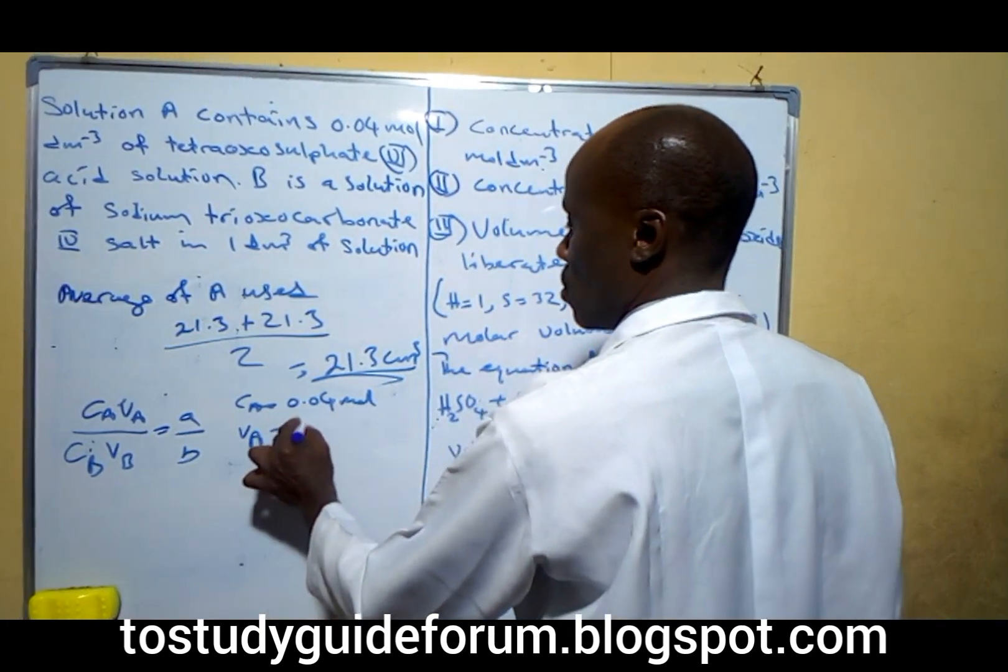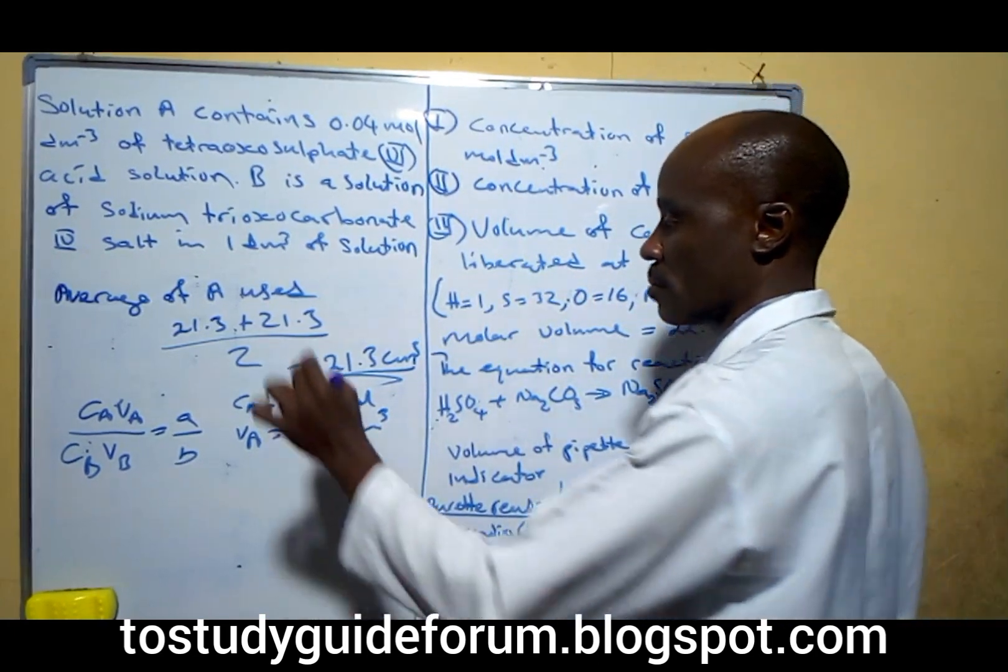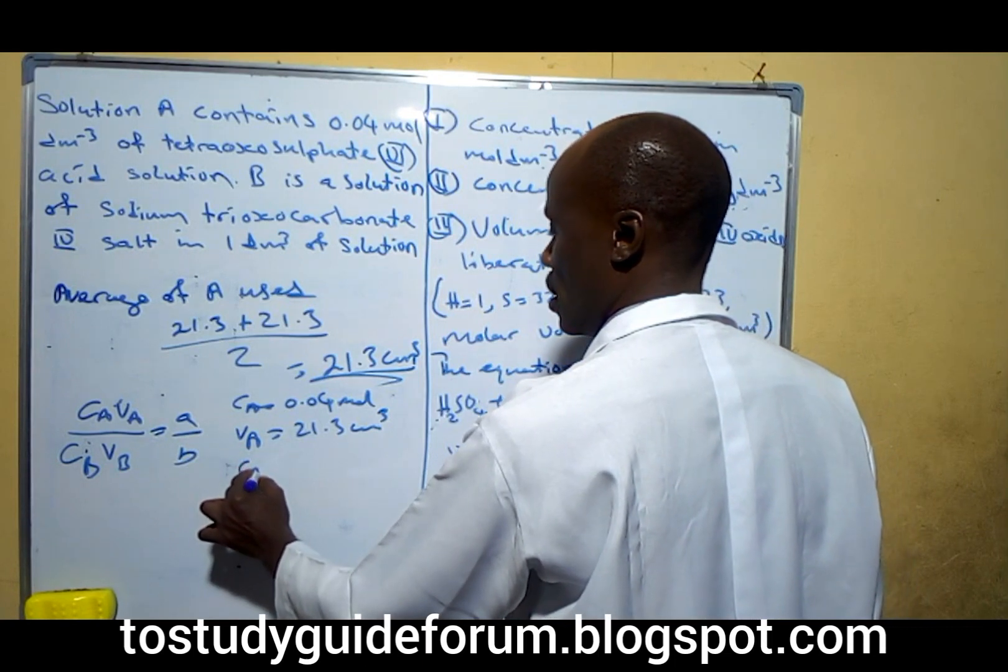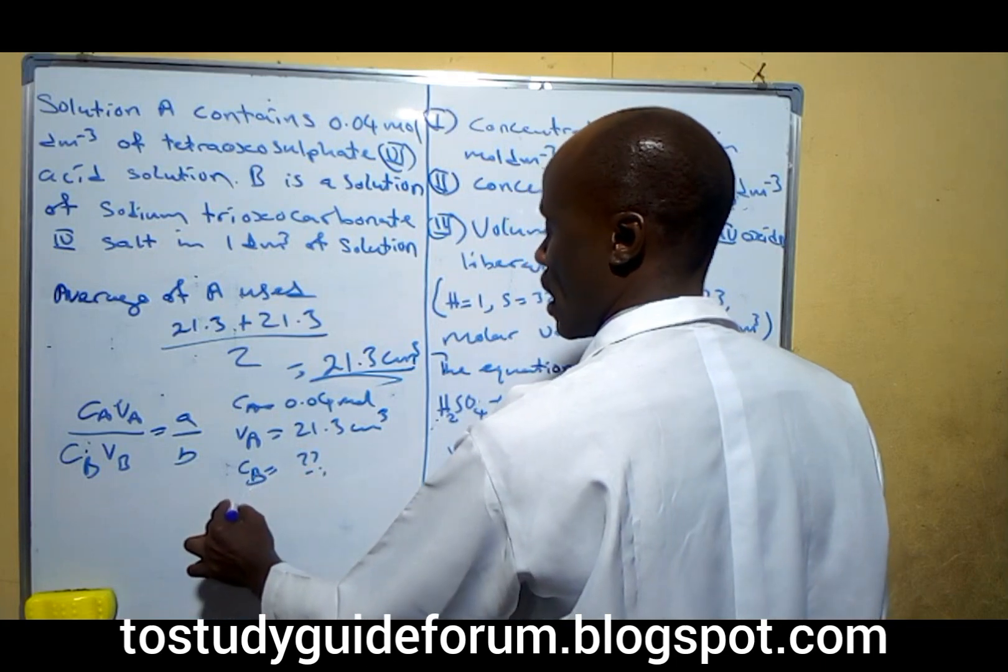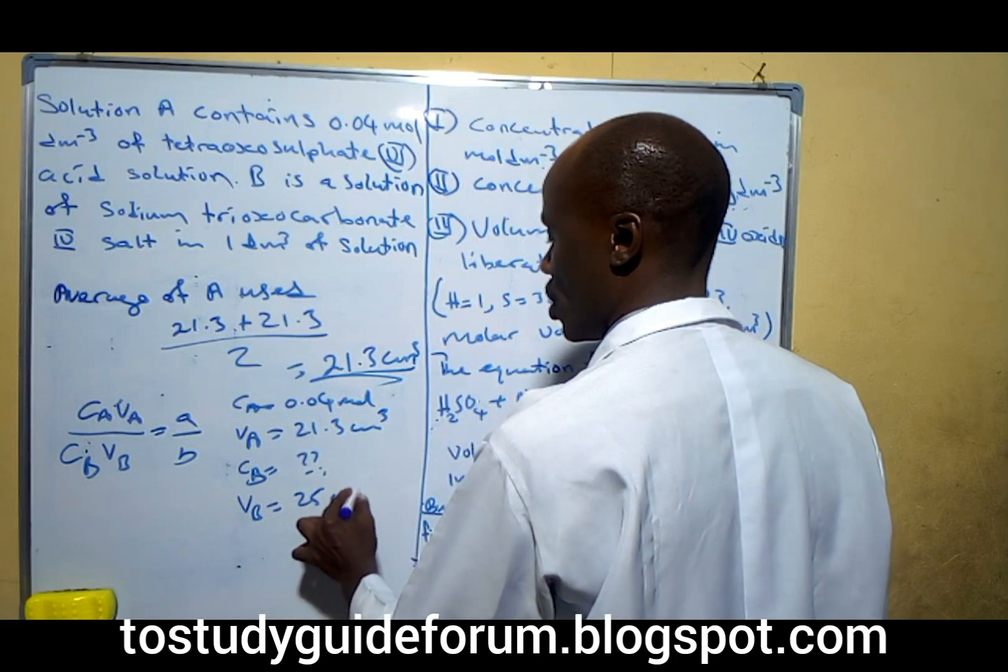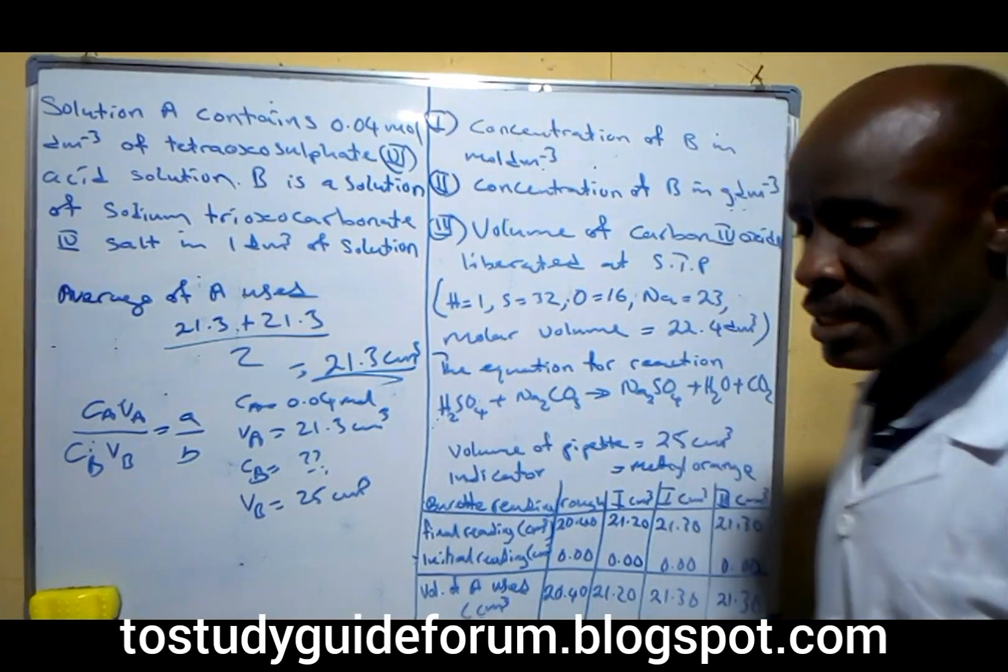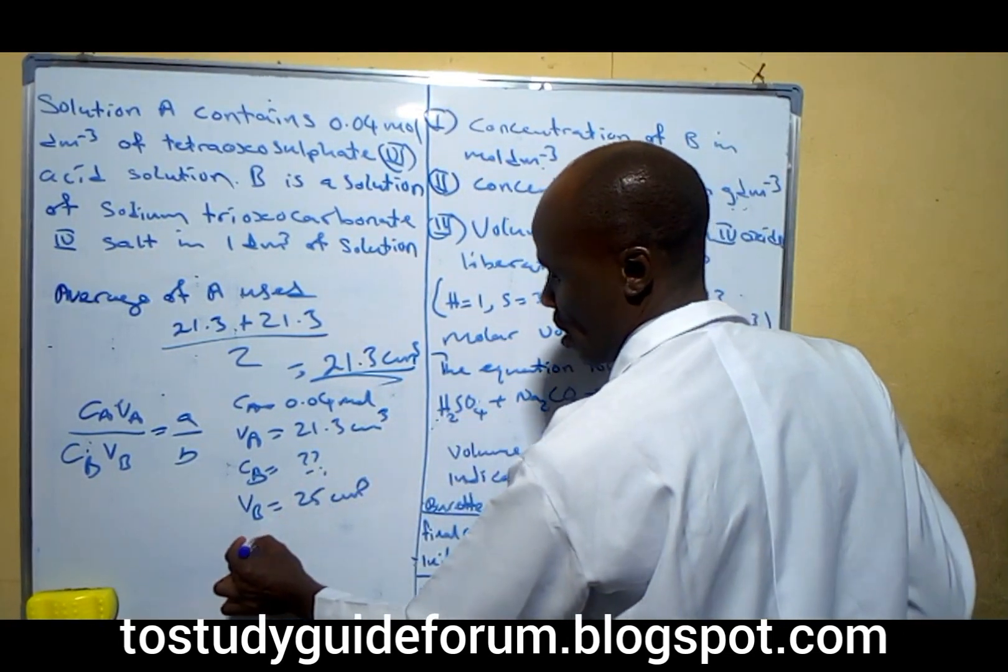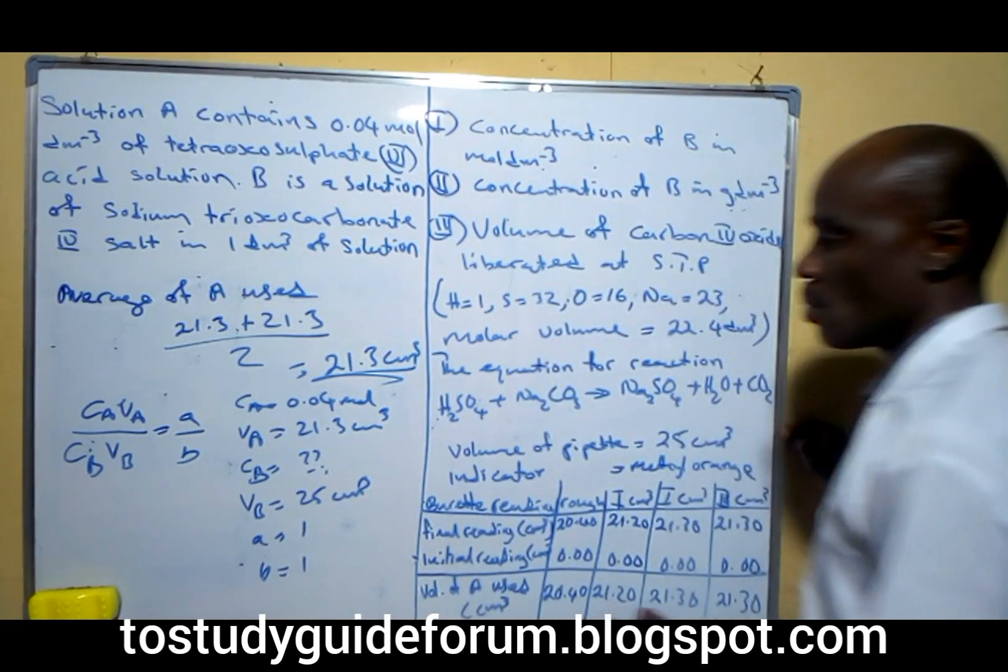Where CA is equal to 0.04 moles and VA is equal to 21.3 cm³. CB is unknown and VB is 25 cm³. A and B is the mole ratio. If you come here you find out this is 1:1. That means A is equal to 1 while B is also equal to 1.